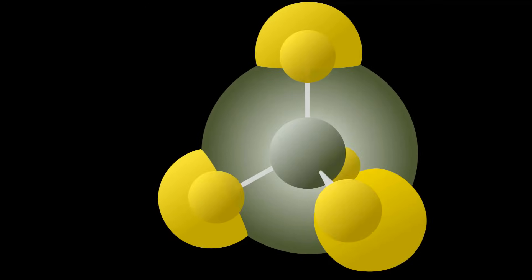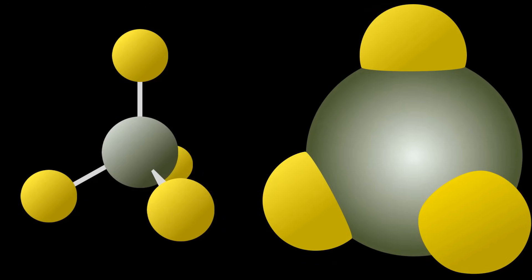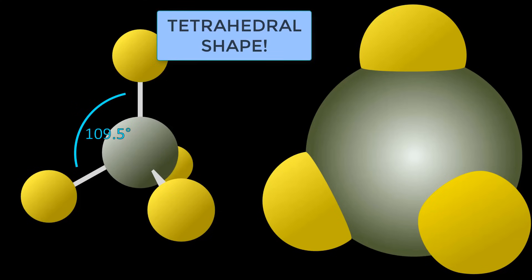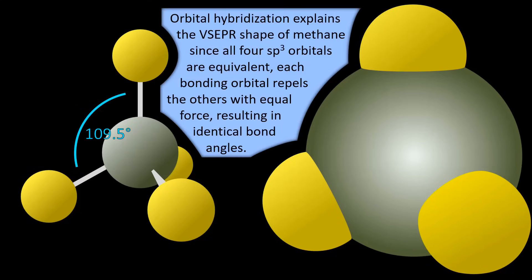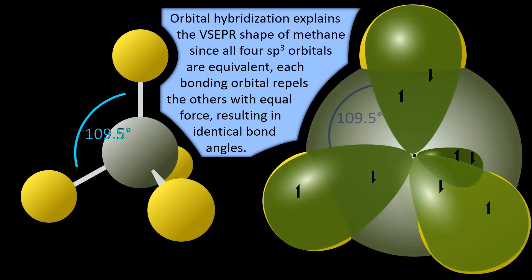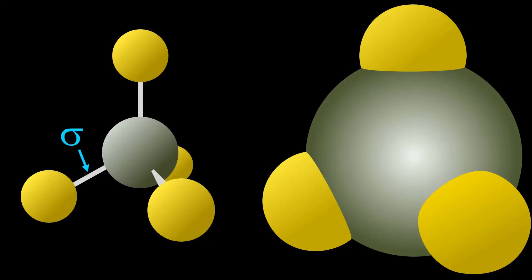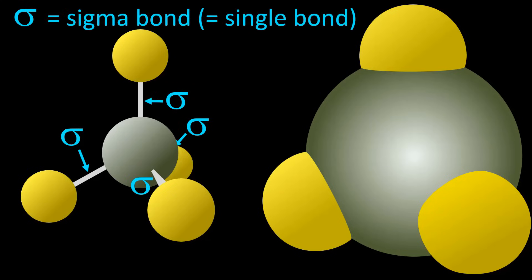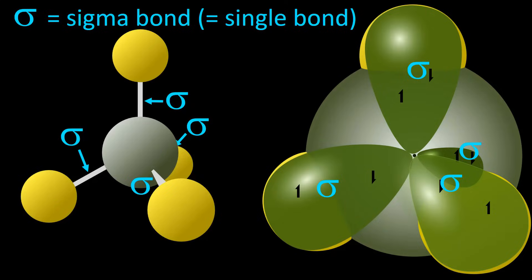The bonds are more readily discernible in a ball and stick model, which also makes the bond angle more visible. Since all four sp3 orbitals are equivalent, each bonding orbital repels the others with equal force resulting in identical bond angles. The bonds in hybridization also have their own nomenclature. The overlapping orbitals are called sigma bonds, which represents the single bond occupied by a single pair of electrons.